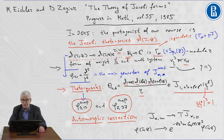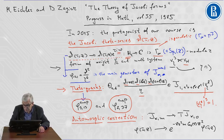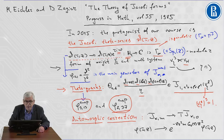In the Eichler-Zagier book, you can find a table for some Fourier coefficients of this modular form and we can give the explicit formula for this function.